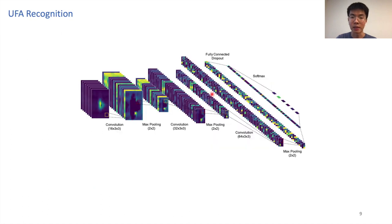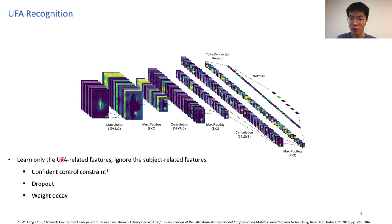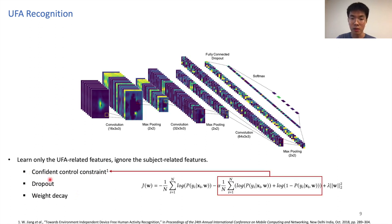Finally, after the eight link features are ready, we use a three-layer CNN for high-level representation extraction and classification. Note that we use three techniques to prevent the model from overfitting. Among these three, the confidence control constraint punishes the model when the model gives an over-large confidence to a training sample.